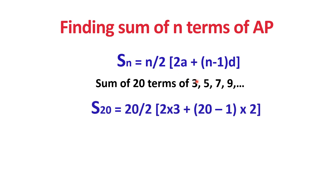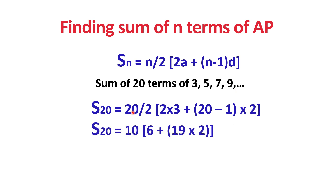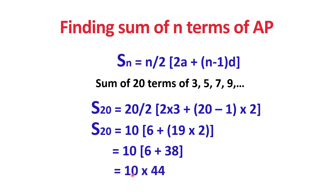Applying the values: S20 = (20/2) × (2 × 3 + (20 − 1) × 2) = 10 × (6 + 38) = 10 × 44 = 440. So if we add the first 20 terms of this series, the sum is 440. This formula is applicable only when the series is in Arithmetic Progression.